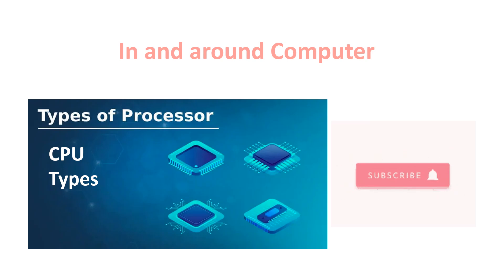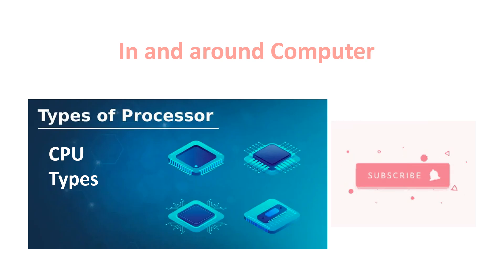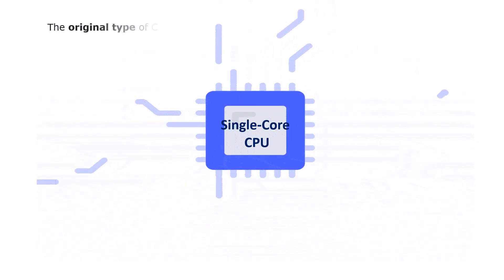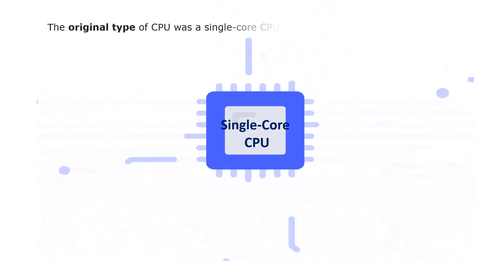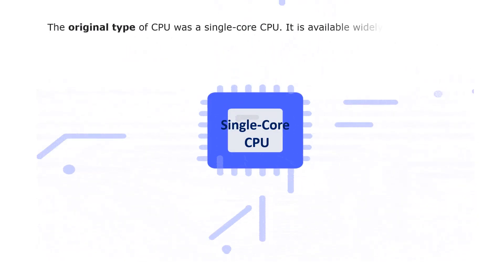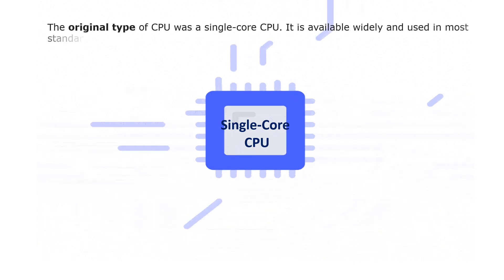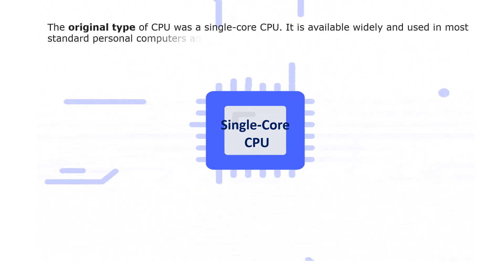Hi, welcome to In and Around Computer. In this video we are going to see the types of CPU, or the types of processors. The types of CPU range from single core to deca core. We can see them one by one.